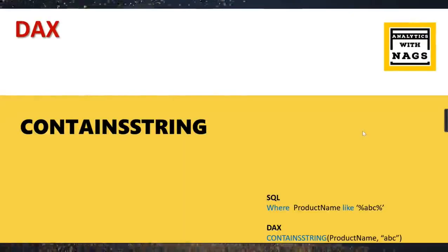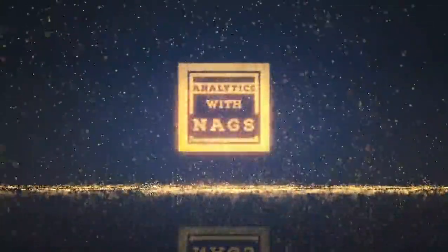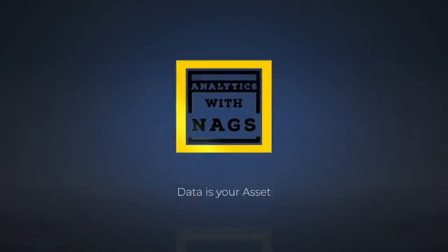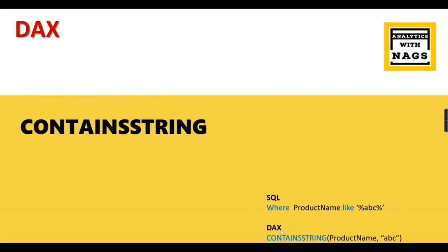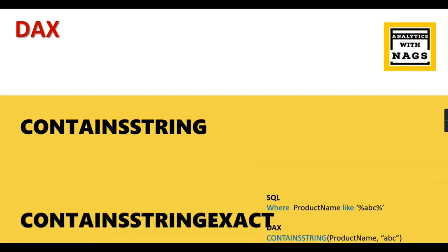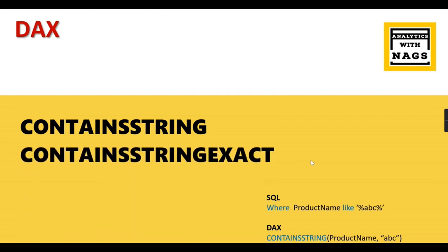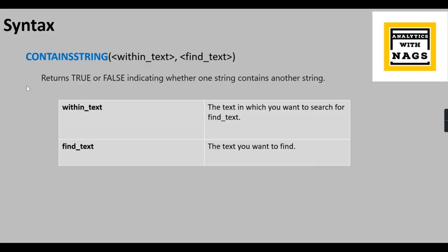Welcome to Analytics. In this video we're going to see about the DAX function CONTAINSSTRING. If you are looking for a SQL equivalent for the LIKE condition, then CONTAINSSTRING solves the purpose. The syntax is CONTAINSSTRING(within_text, find_text) — the column you're searching goes in the first argument and whatever you are trying to search goes in the second argument.